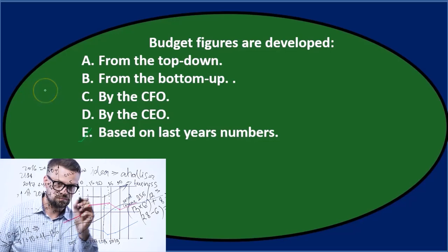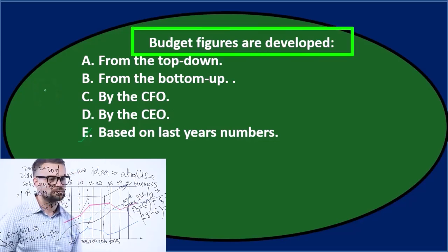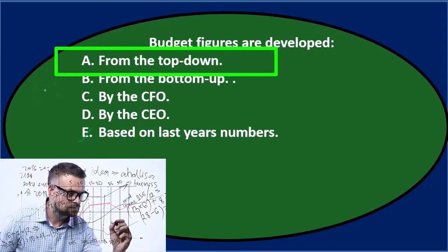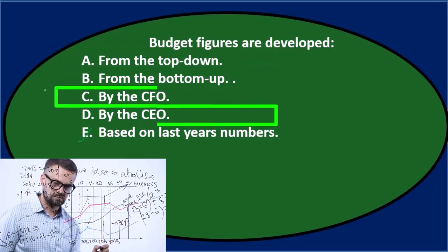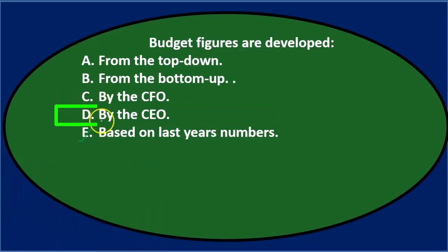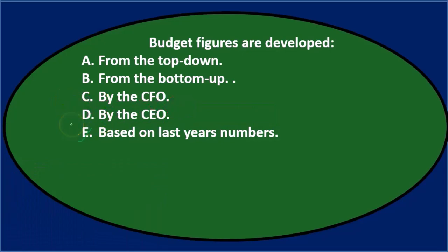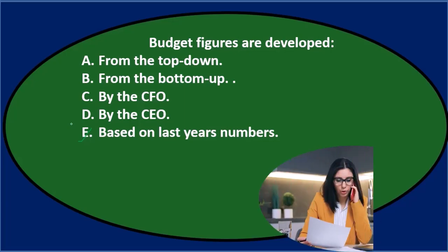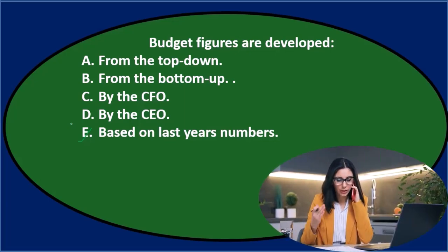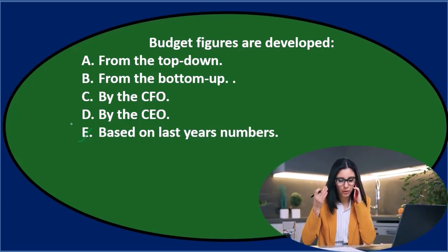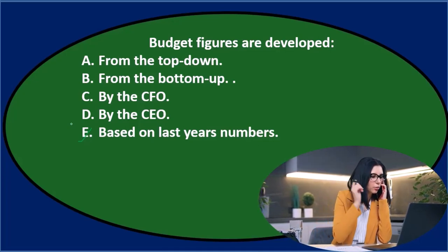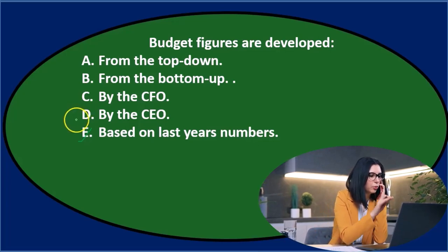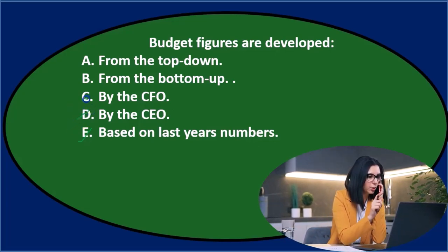So let's go through this again. Budget figures are developed either from the top down or bottom up, and then we've got the CFO or the CEO. Now, of these four, the CFO and the CEO would indicate that all the figures are developed by one person in the organization, as if one person's going to, in a big company, know how to do the whole entire budget with no help. That's not going to happen. That's not the way it's going to work. So it's not going to be these.